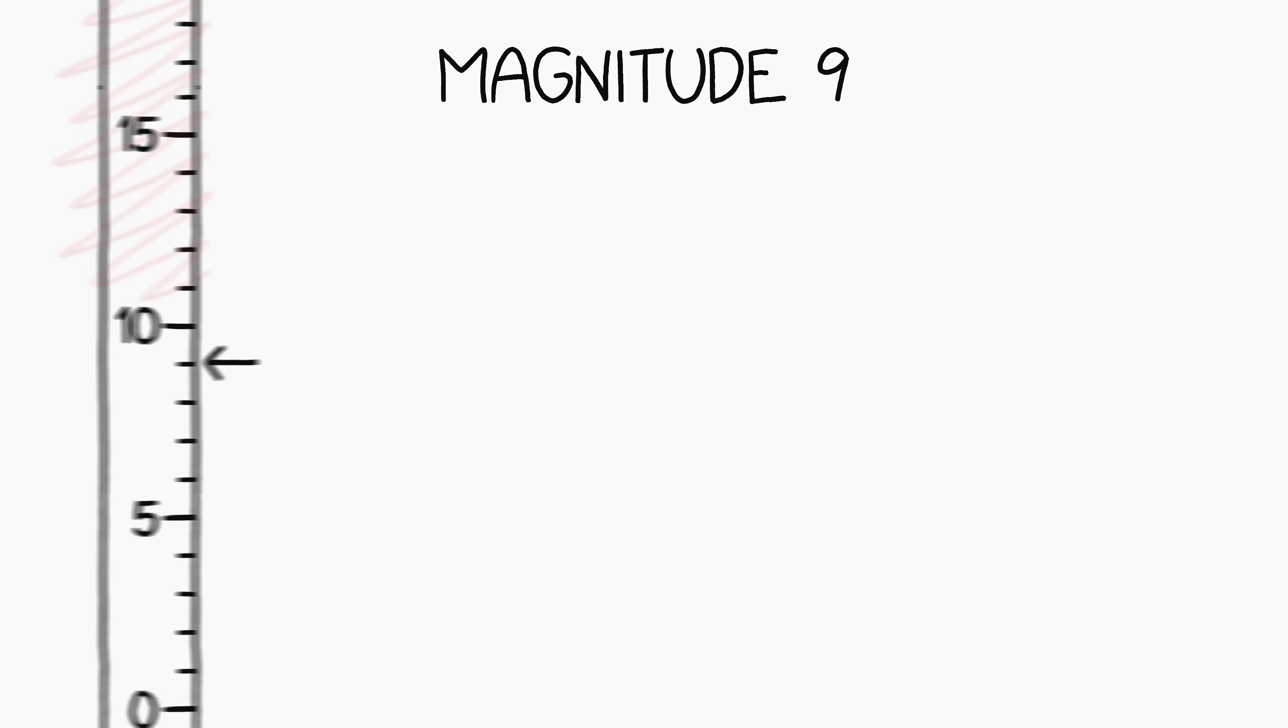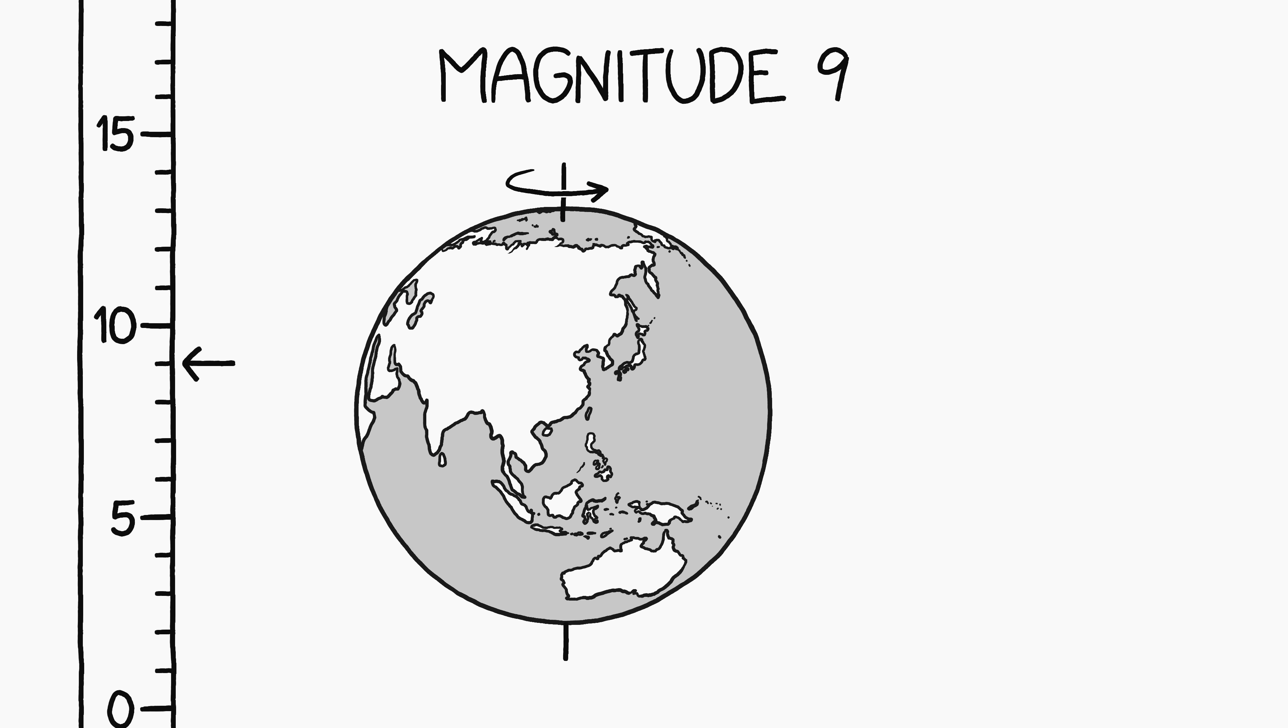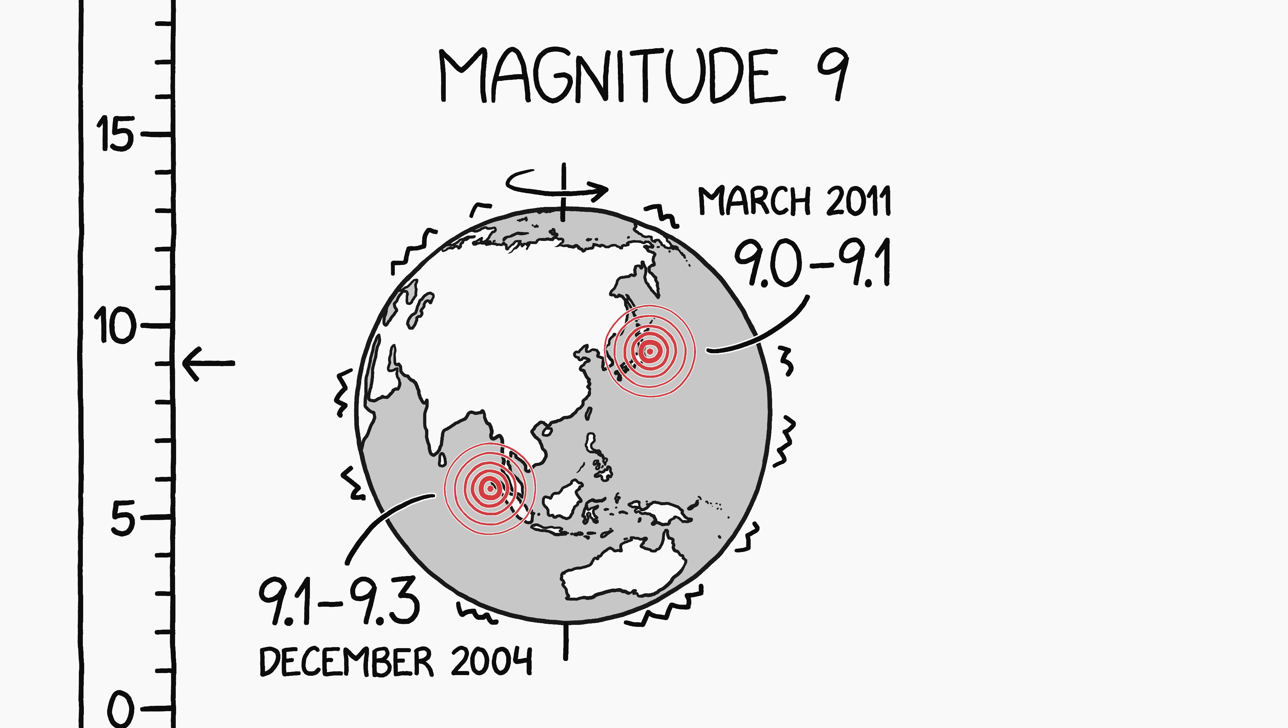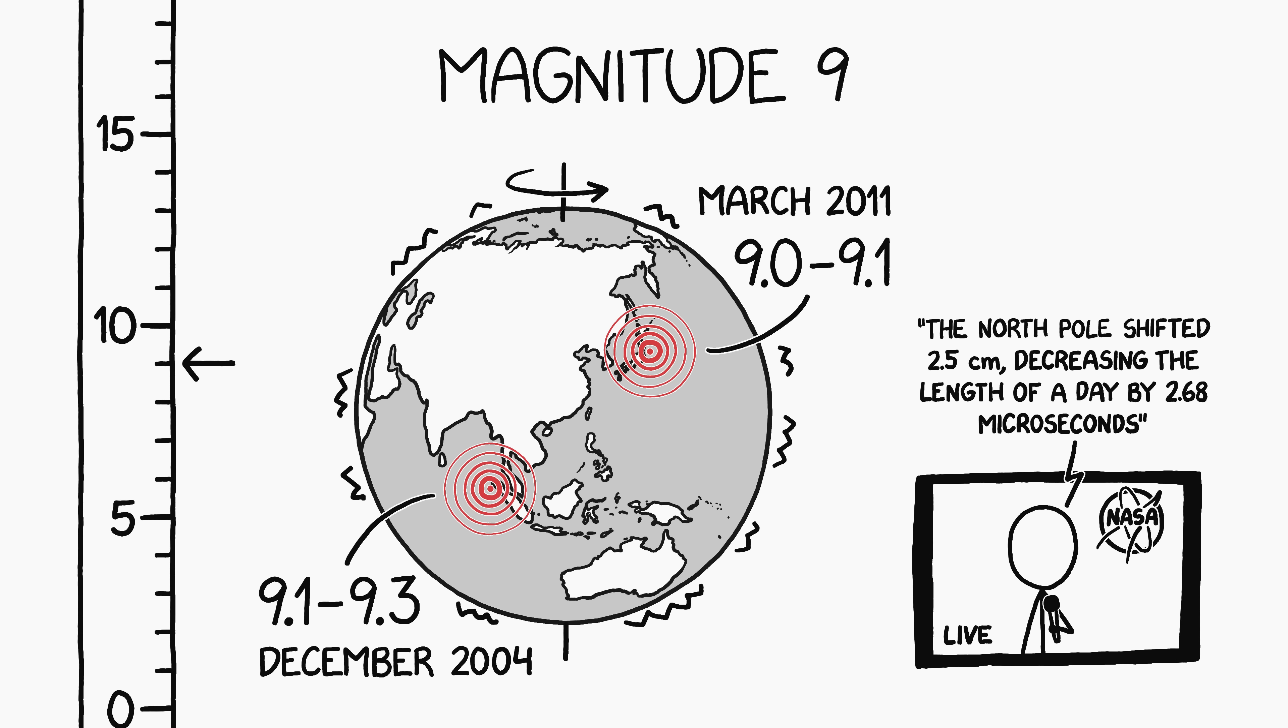But even if 10 isn't the top of the scale, it might as well be. A magnitude 9 earthquake already measurably alters the rotation of the Earth. The two magnitude 9 plus earthquakes this century both altered the length of the day by a tiny but measurable fraction of a second.